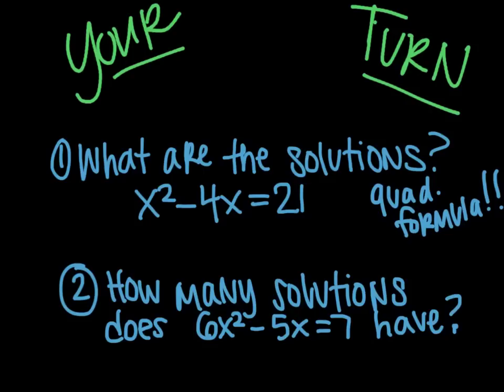Your turn. What are the solutions for number 1 using the quadratic formula? So x squared minus 4x equals 21. Find those solutions, or solution, I should say. And then number 2, how many solutions does 6x squared minus 5x equals 7 have using the discriminant?